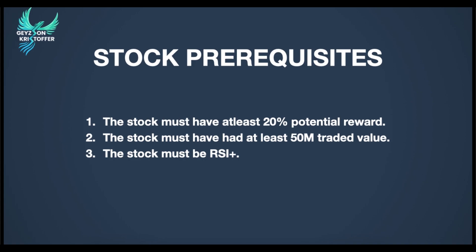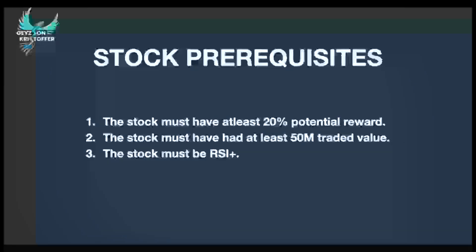Pre-requisites of the stock. The stock must have at least 20% potential reward. This can be calculated by measuring the present distance of the current price to the next two resistances. Number two, the stock must have had at least 50 million in traded value. This is a loose prerequisite as there are stocks that have only 40 million in traded value but are still eligible for the setup. And the last one, the stock must be on RSI positive, meaning the stock is above RSI 50.